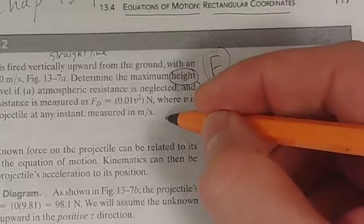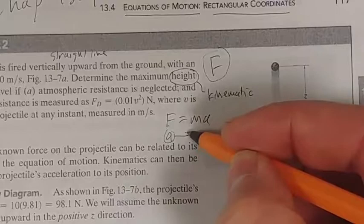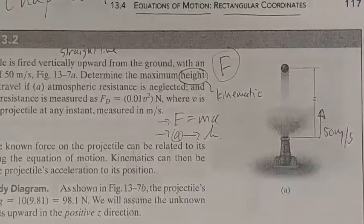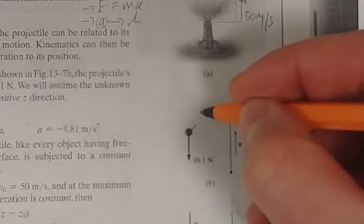So how are we going to do that? Well, let's have a look. So we need to first relate force to acceleration using our kinematic equation. Then we take our acceleration and we determine our height from the acceleration. So that's the idea. But the first thing we need to do is we need to draw a free body diagram. So there is our projectile.